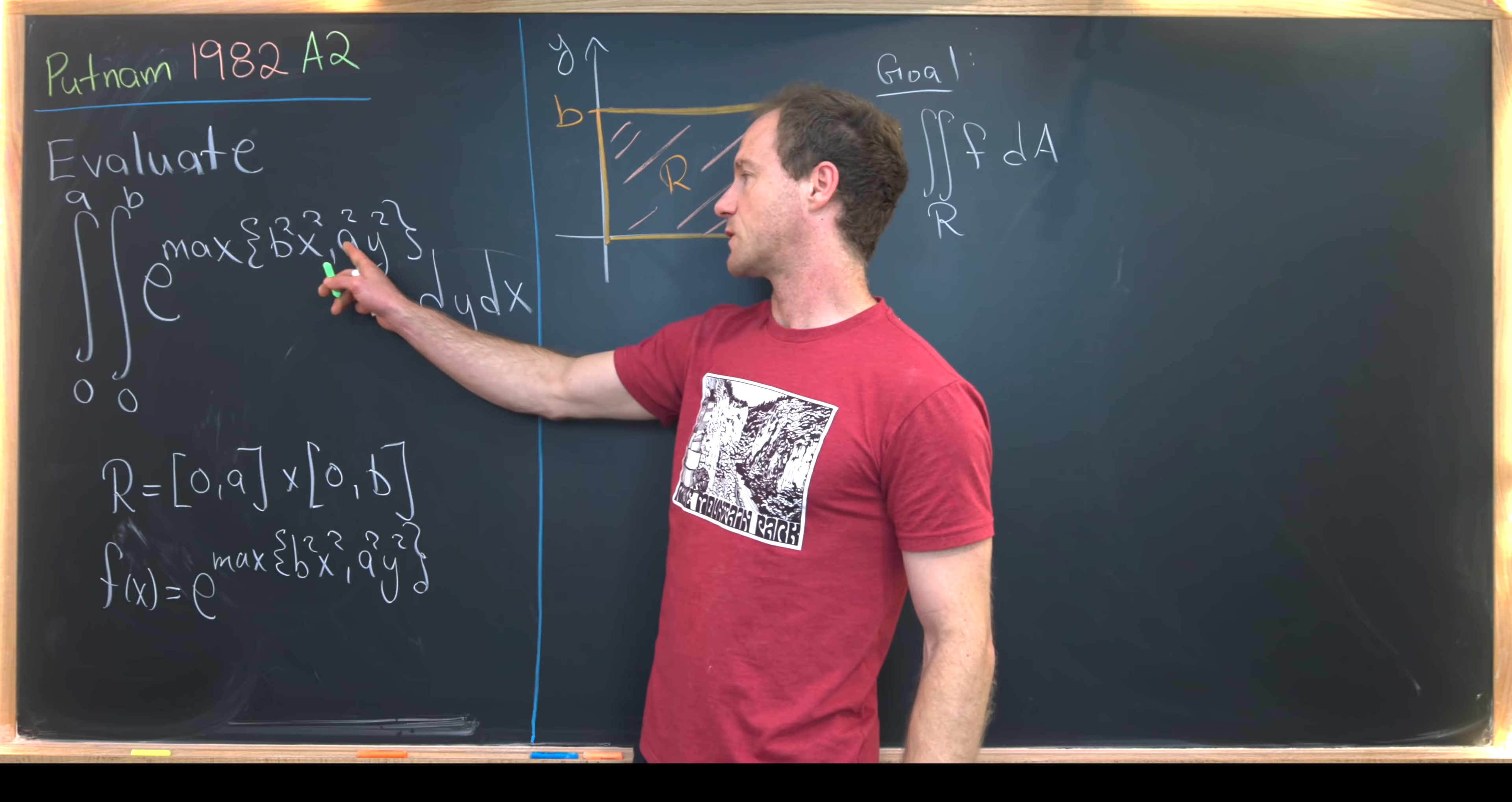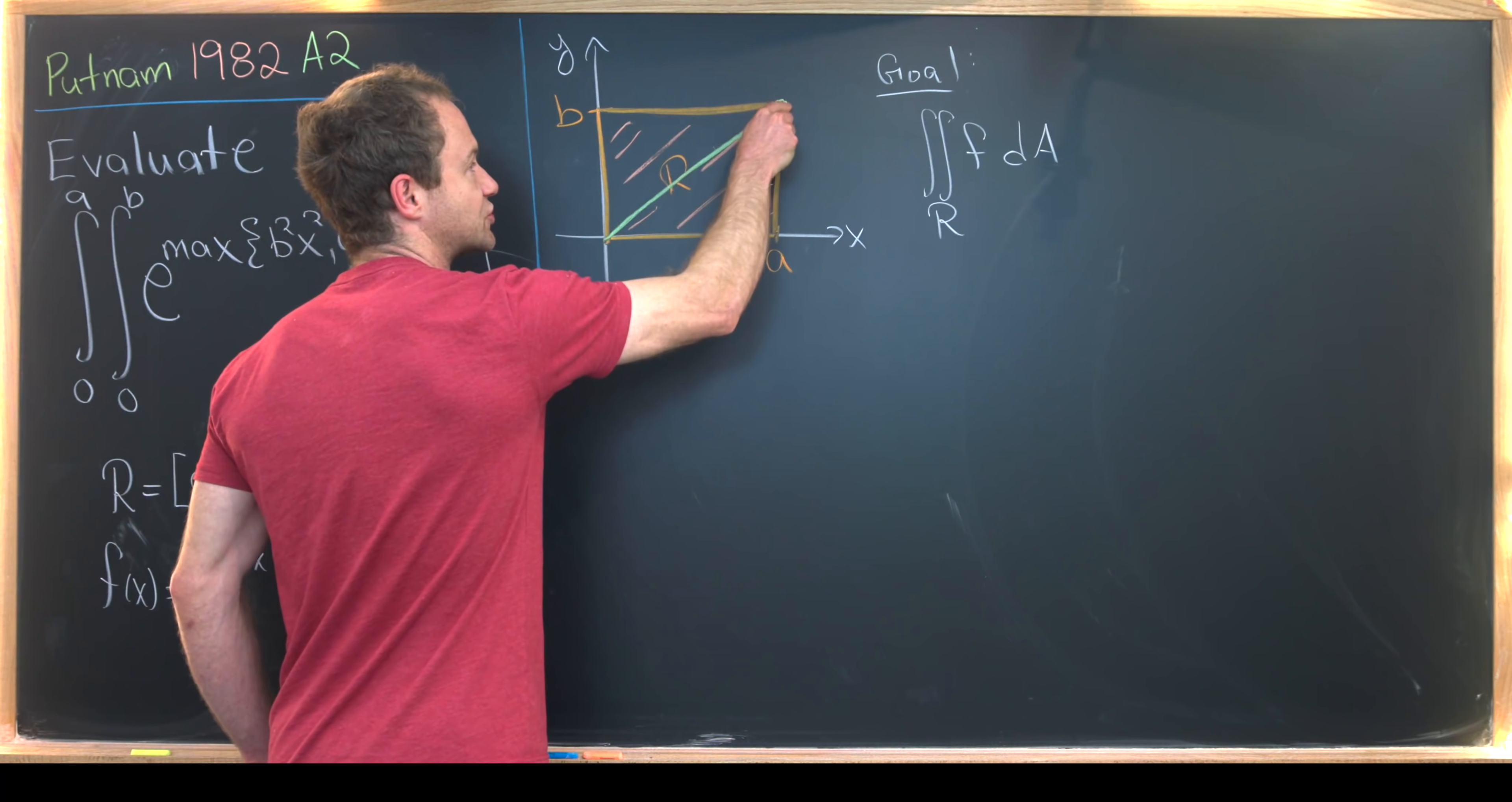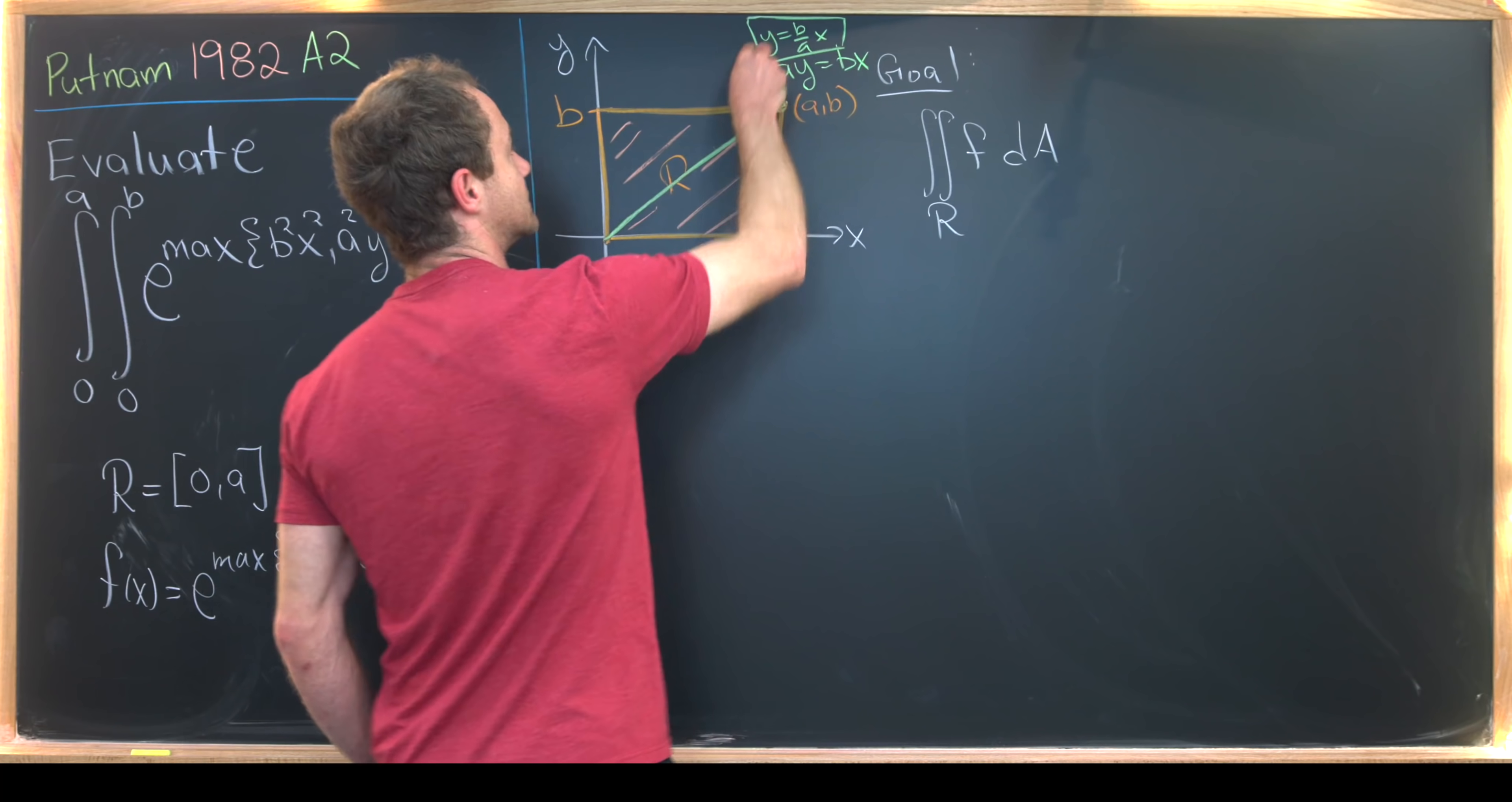So notice that b squared x squared equals a squared y squared, when bx equals ay. But bx equals ay is just a line. So it's the line y equals b over a times x. You know, that goes from the origin to this corner of our rectangle. So I'll just write this right here. This is the line a y equals b x, or y equals b over a times x. Notice this guy right here is the point a comma b. Now, like I said, you might want to write this as y equals b over a times x if you need to.